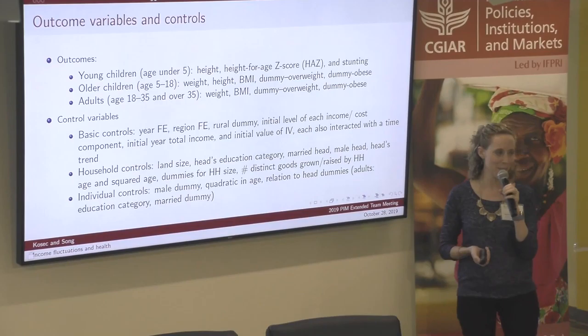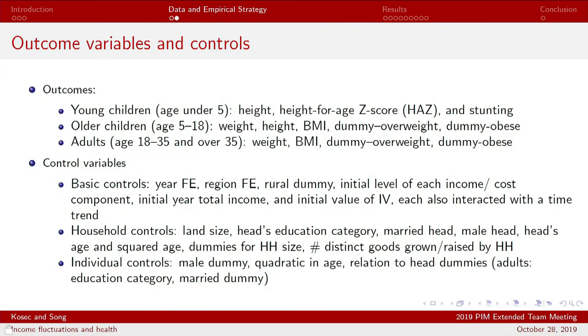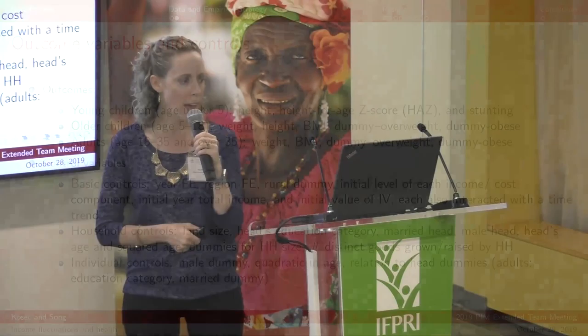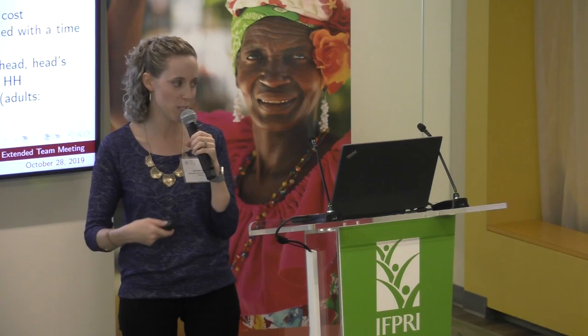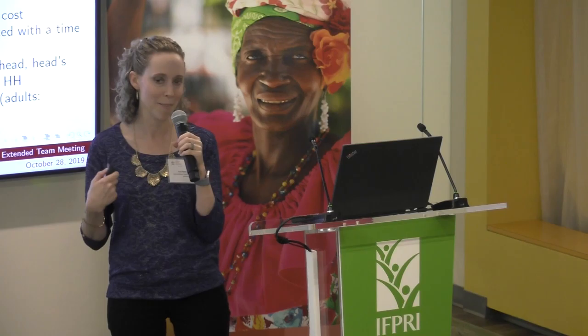Moving on, the outcomes we're looking at include young children, older children, and adult health anthropometrics. We include year fixed effects, region fixed effects, rural dummies, initial levels of various income source dependencies, and their interactions with time trends. Results are not particularly sensitive to these, but we show results with and without a host of individual and household controls, which are included in all anthropometric regressions.